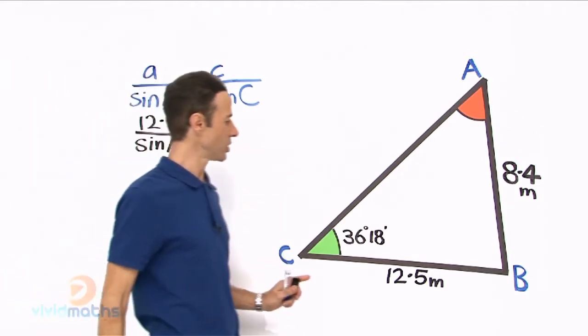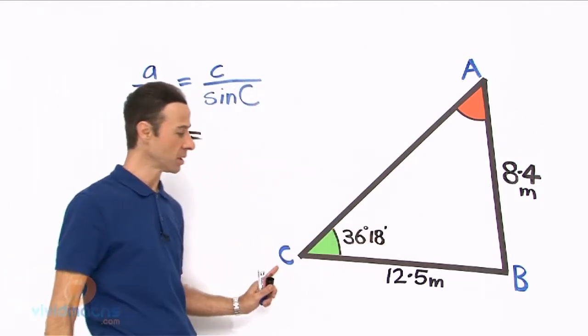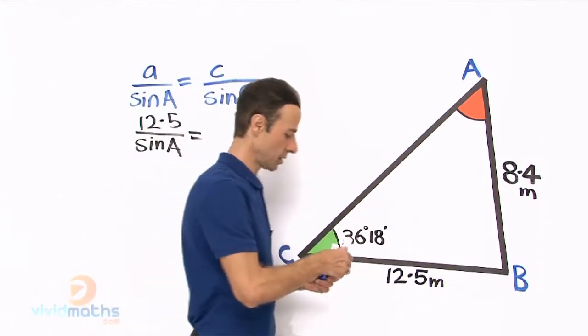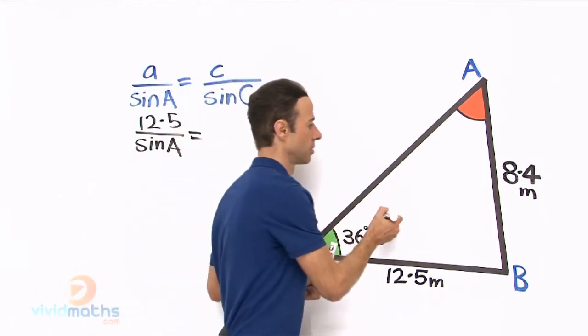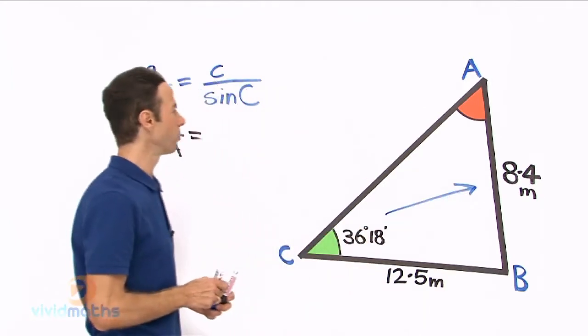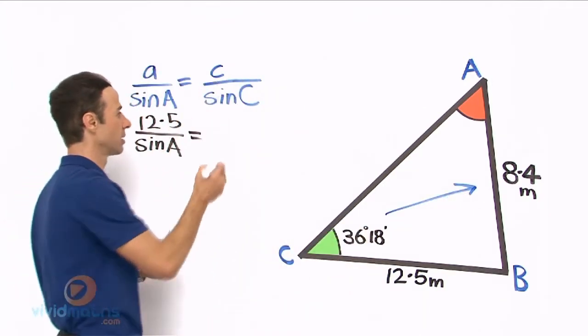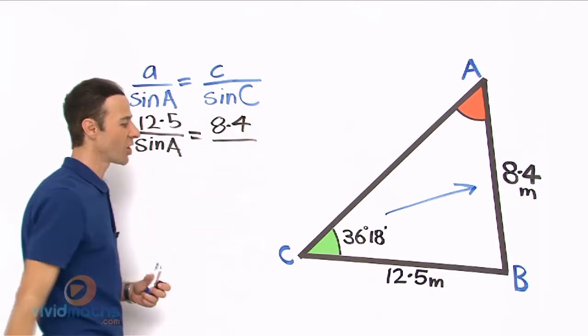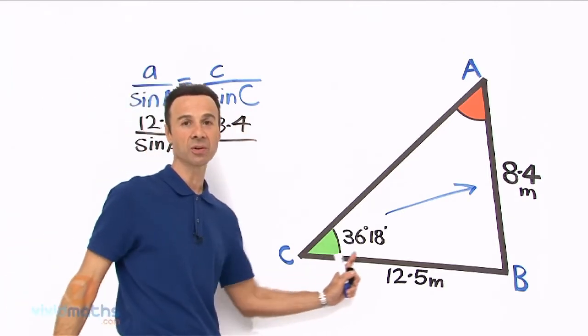Let's put that in here, and that is going to equal little c, which is right there opposite big C here, which is the angle opposite that directly in front. Let's put that in: there is 8.4, all over sine C which is 36 degrees and 18 minutes.